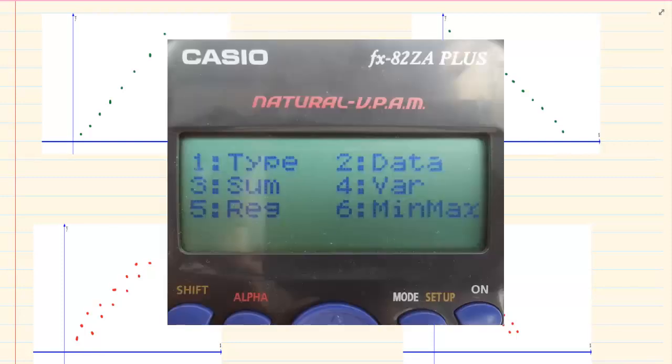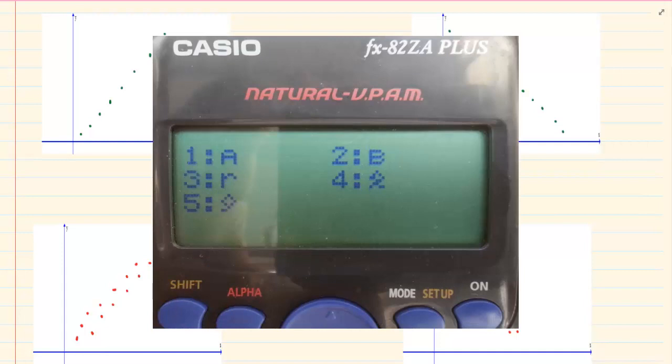Now the sign on your calculator if you go and you press shift 1 and you press number 5 for regression you'll see there's an A, a B and an R. Now R is what they're referring to in reference to the regression.